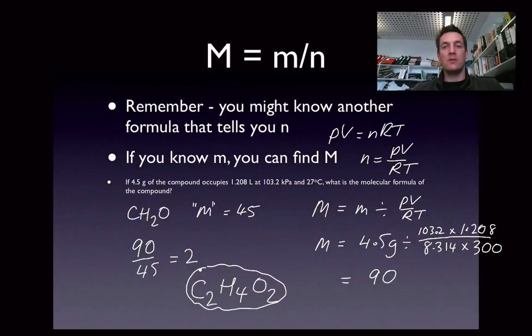So there you are, that's how you turn an empirical formula into a molecular formula. Sometimes you'll be given a little bit more information than that. Sometimes you won't have to find the number of moles, you might even be told that, or you might just be told the molar mass straight away. But whichever way you're doing it, the aim of the game is to basically get to this step where you find out how much bigger the real molar mass is than the molar mass of the empirical formula.